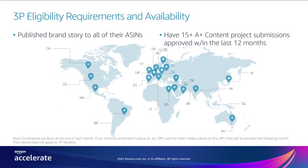Today, premium A-plus is launched in all Amazon stores worldwide, and is available at no cost to eligible third-party brand owners during the ongoing promotional period. You're eligible if you meet two criteria. First, you have already published an A-plus brand story to all ASINs within your catalog. You can confirm this by accessing the A-plus content manager and searching to see if you have created and published a brand story project. We will also talk about the brand story feature later in the presentation. Second, you have had at least 15 project submissions of A-plus content approved within the past 12 months. You can confirm this by accessing the A-plus content manager and checking the status of your submitted projects and the last modified date.